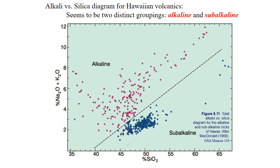The total alkalis versus silica diagram — where we plot sodium plus potassium versus silica — allows us to define our largest subgrouping of igneous rocks: alkaline versus subalkaline rocks. Shown here is a total alkalis versus silica diagram for alkaline rocks in red and subalkaline rocks in blue for rocks erupted from Hawaii's volcanoes. Alkaline rocks are richer in alkali contents and commonly silica undersaturated, meaning less silica and higher total alkali contents. Subalkaline rocks are silica saturated to oversaturated, with less sodium and potassium relative to silica, reflecting a different overall slope between the two elements.